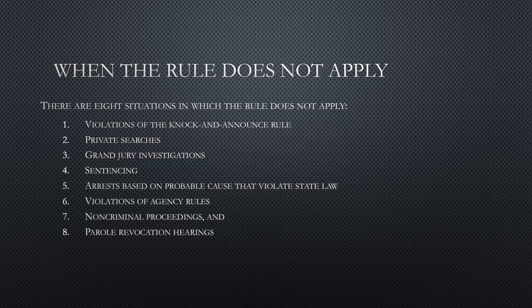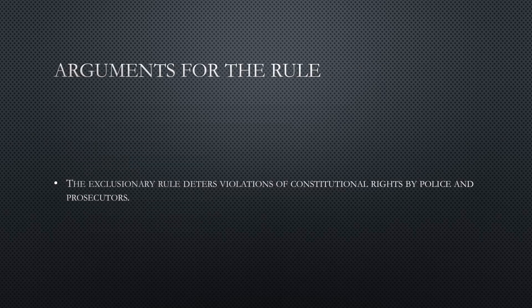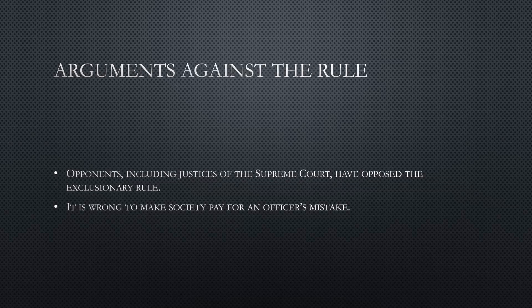The rule is supposed to deter violations of constitutional rights by police and prosecutors — if they violate defendants' rights they will lose their case. However, there are arguments against the rule, including from Supreme Court justices who have opposed it. The argument is that it's wrong to make society and victims pay because of a police officer's mistake — the prosecution loses its entire case because a police officer did something wrong.